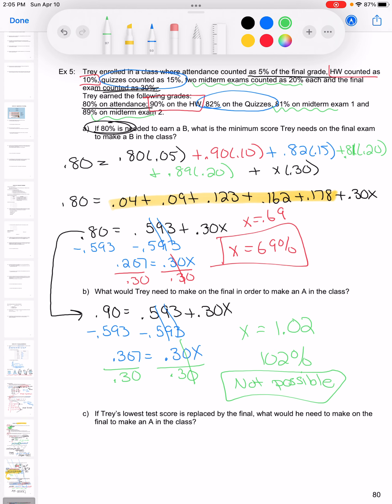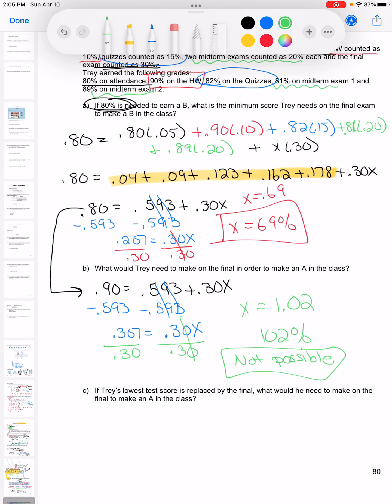However, we've got this part C. So we're going to keep our same grades that we had from before. But now we're going to say that the lowest test grade is replaced by the final. So now I'm going to have two X's. I don't know what the final is, and I don't know what my grade for my lowest test grade is going to be.